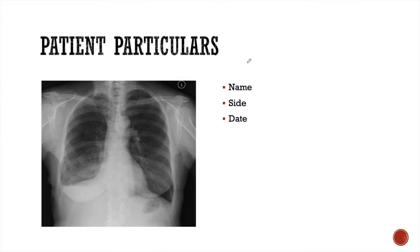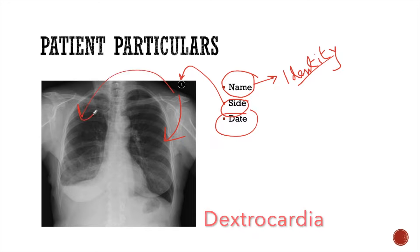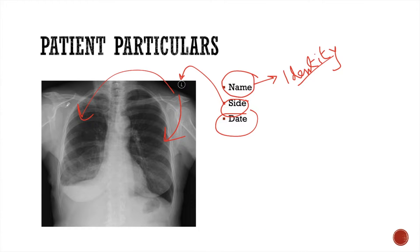In patient particulars, we should note the name, the site, and the date of examination. Name holds importance in giving identity to the chest x-ray. We should then check for the side — the L marking should be on the left side. The heart lies towards the L marking. Sometimes when the heart lies on the opposite side, it may be a case of dextrocardia or situs inversus. The date of examination, if provided, should also always be checked.